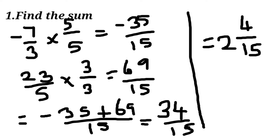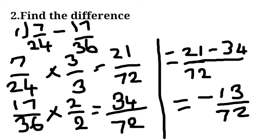Seventh sum: we convert into mixed fraction. Here LCM is 15 and then we multiply according to each number and we add, we get the answer 34 by 15, converted into a mixed fraction because the given numbers are in mixed fraction form.